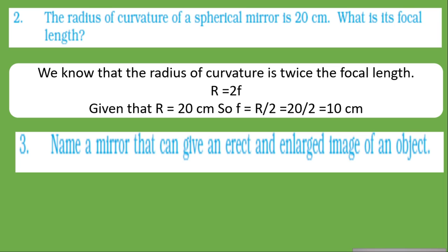Name a mirror that can give an erect and enlarged image of an object. The answer is a concave mirror, when the object is placed between the pole and the focus. Convex mirrors always give an erect but diminished image, and plane mirrors give an image the same size as the object.